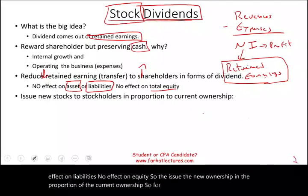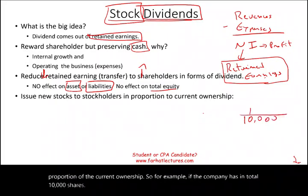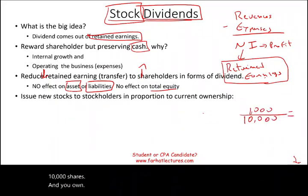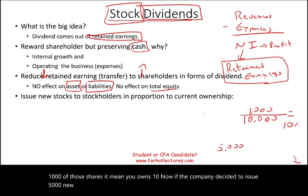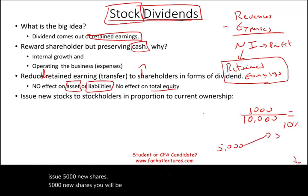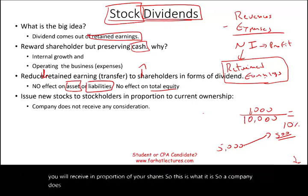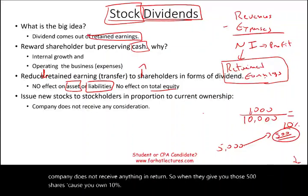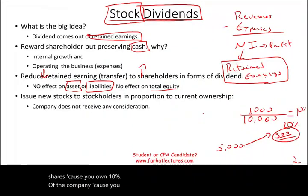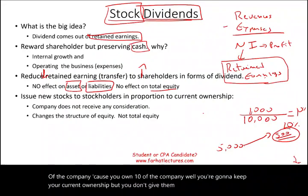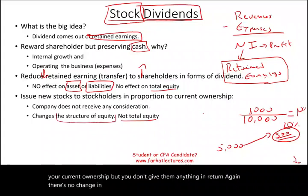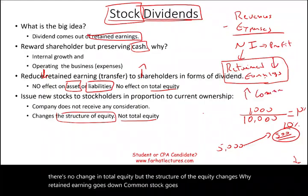We issue the new ownership in proportion to current ownership. For example, if the company has 10,000 shares total and you own 1,000 of those, you own 10%. If the company decided to issue 5,000 new shares, you will be getting 10% of those — 500 shares — in proportion to your current ownership. The company does not receive anything in return. You keep your current ownership percentage. There's no change in total equity, but the structure of equity changes: retained earnings goes down and common stock goes up.